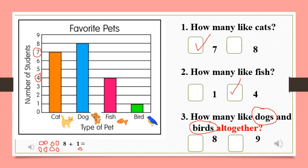How many students like dogs and birds all together? Nine. Excellent job, pat yourself on the shoulder five times and give yourself some kisses. You are doing an excellent job.